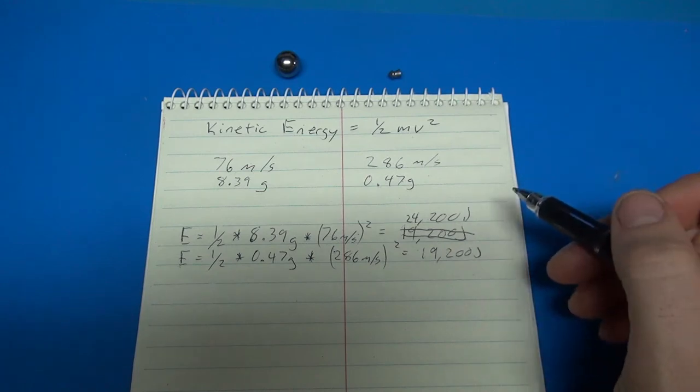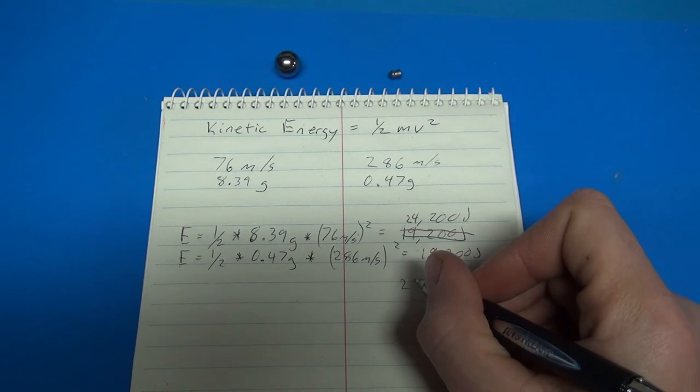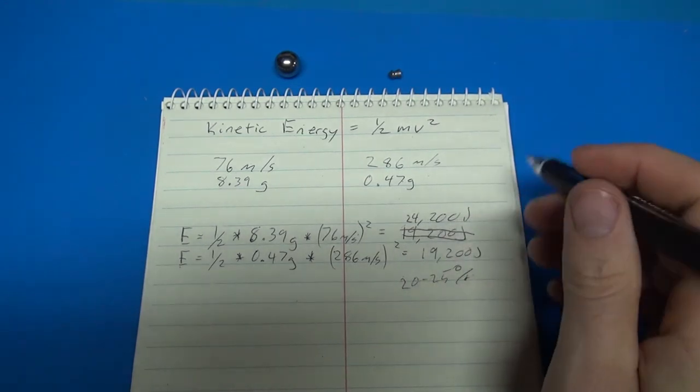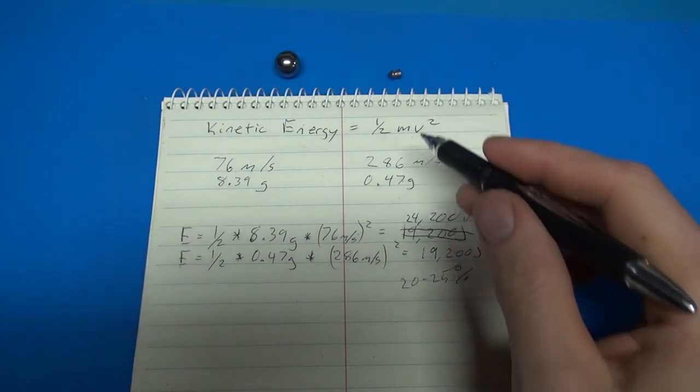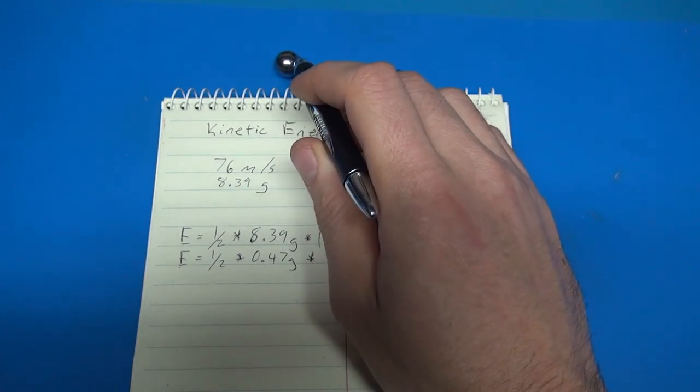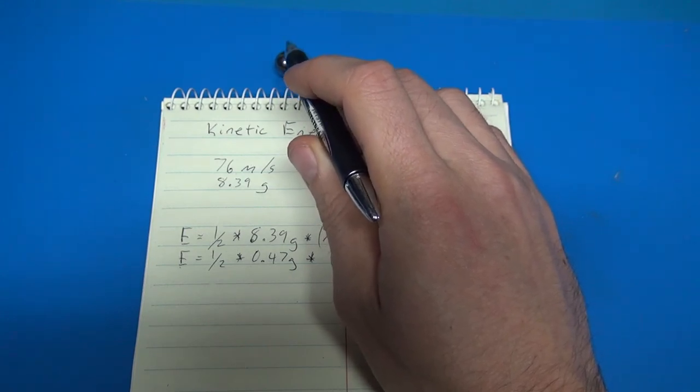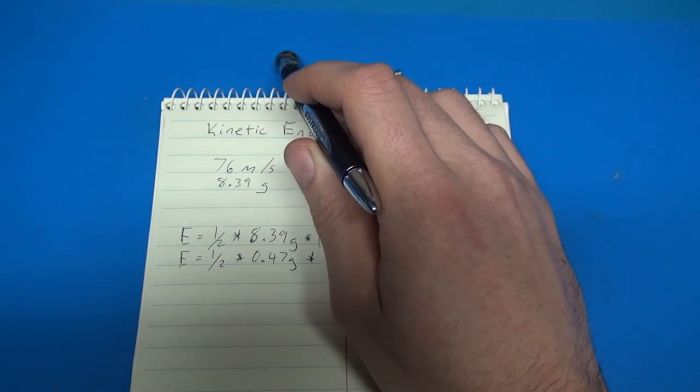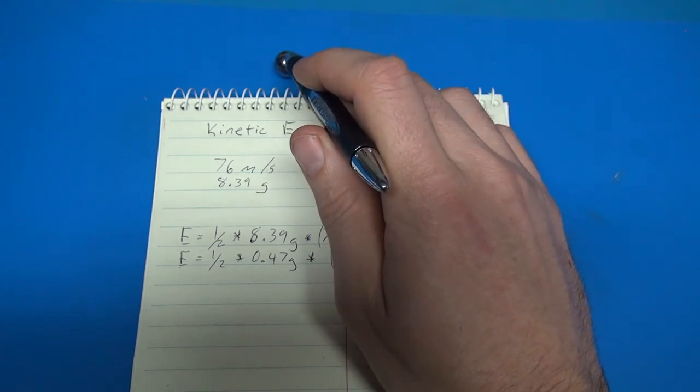It's maybe 25% more energy in the ball bearing. So, not a huge difference. But what really does make a big difference, I think, is that this bigger area means that more of the energy from this pellet will generally be absorbed by the target. So that makes the explosion bigger and sort of more energetic, just because more energy is transferred from this guy into the target.